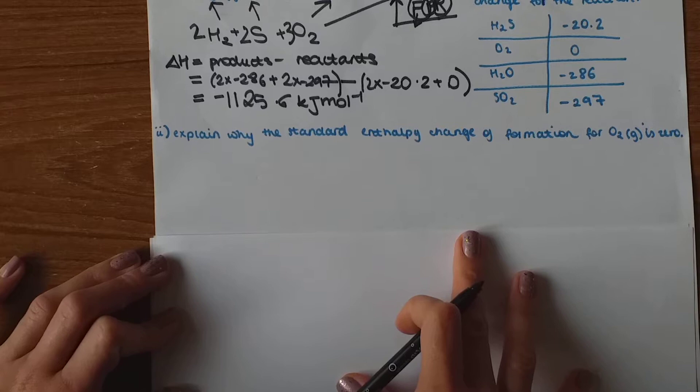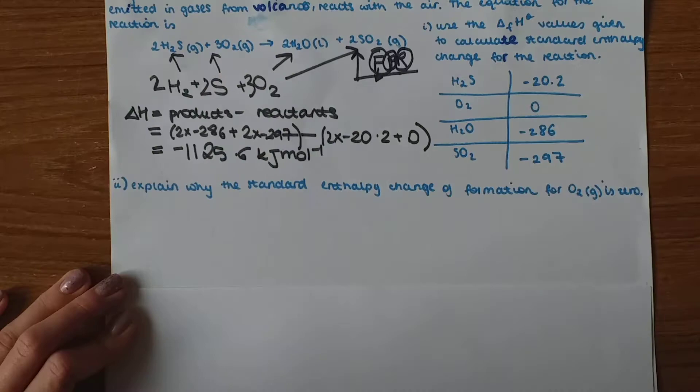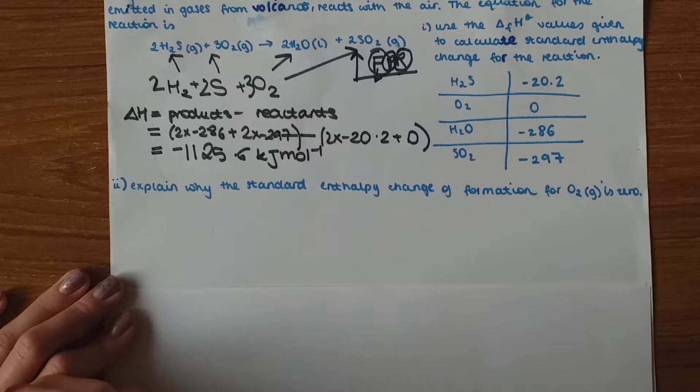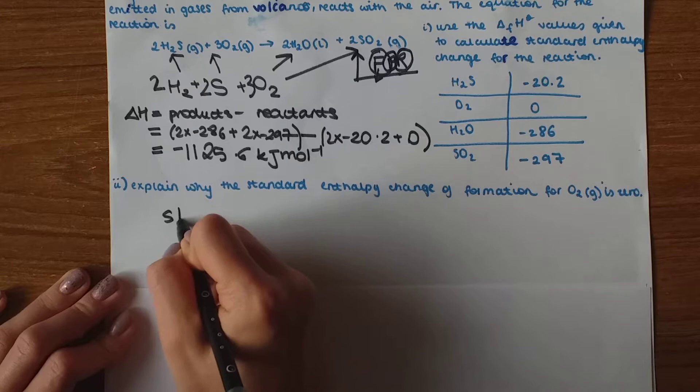The second part asks us to explain why the standard entropy change of formation for O2 is zero. So as I said before this element is in its standard state so the enthalpy change of oxygen is zero.